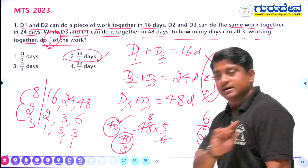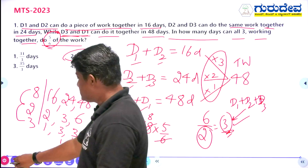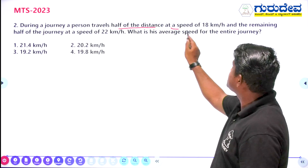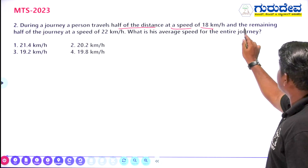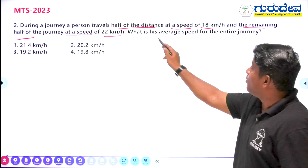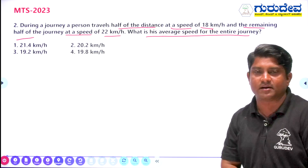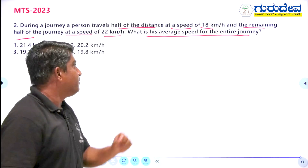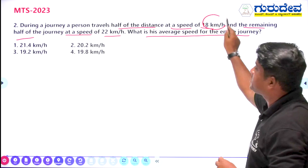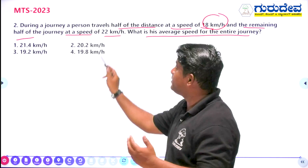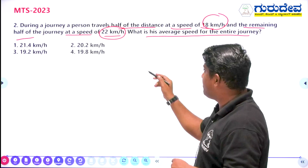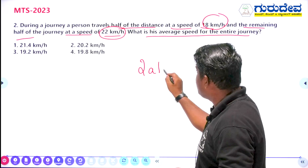Second question: During a journey, a person travels half the distance at 18 km/h and the remaining half at 22 km/h. What is the average speed for the entire journey? Whenever two speeds are given for equal distances, we use the formula: average speed = 2ab ÷ (a + b).